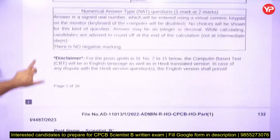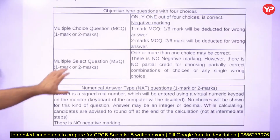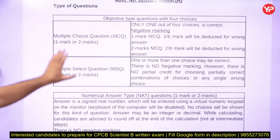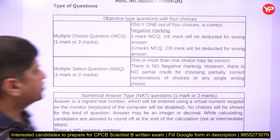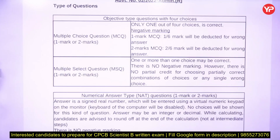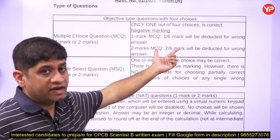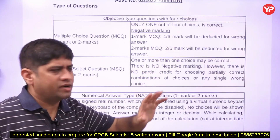If you have any doubt about what NAT, MSQ, or MCQ means, you can refer to the on-screen details. Negative marking applies only to MCQs: one-sixth for one mark, two-sixths for two mark. So for two-mark questions, do not make any blind guess. For one-mark questions, a calculated guess can be made, but not for two-mark questions.